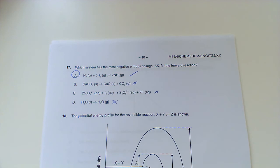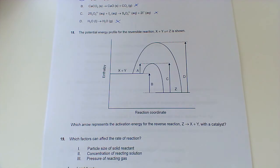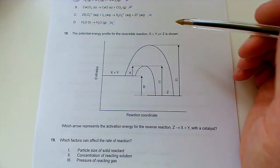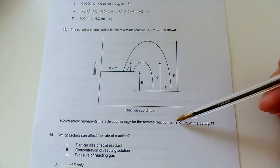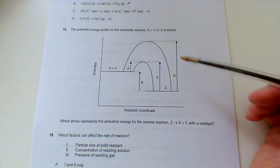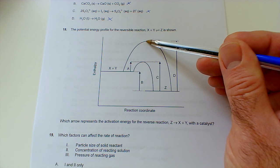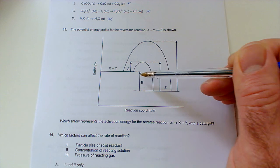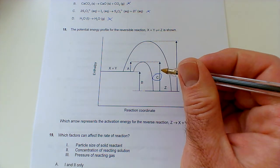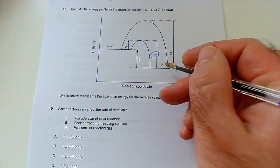Number 18: potential energy profile for the reversible reaction X plus Y going to Z is shown. Which arrow represents the activation energy for the reverse reaction Z going to X plus Y? This is the activation energy without a catalyst, this is the activation energy with a catalyst. We want the reverse reaction going from here to here, so we'll want to go with C. Careful not to label Z.